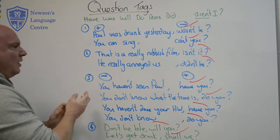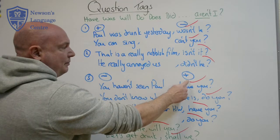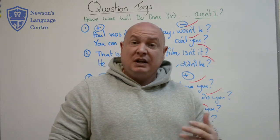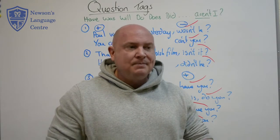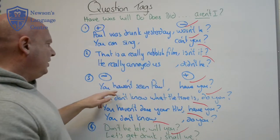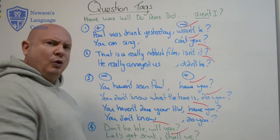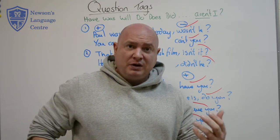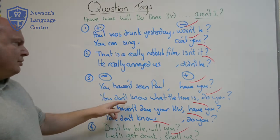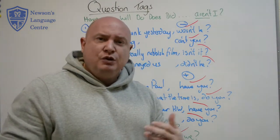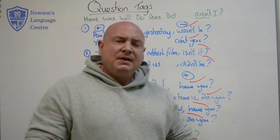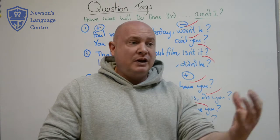Now we'll go to the third pattern. Here we put the negative first and the positive tag at the end. This can be a very polite question — actually asking in this form is very very polite. It could also be that you're trying to get information from someone. For example: 'You haven't seen Paul, have you?' — intonation goes up, I'm trying to elicit information. You'd answer 'No, I haven't seen him this week because he was drunk all night long.' Another example: 'You don't know what the time is, do you?' — a very polite question that creates distance and elicits someone to respond. 'Yes, it's about 3:30.'